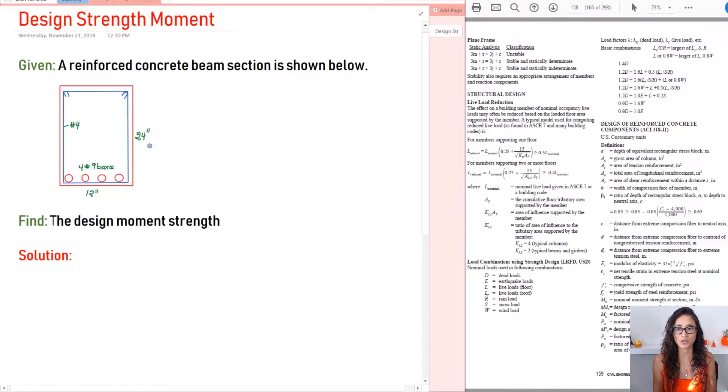So we are given a reinforced concrete beam that has H equals 24 inches, B is equal to 12 inches, then we have four number 9 bars and then we have a stirrup number 4. And we need to find the design moment strength.